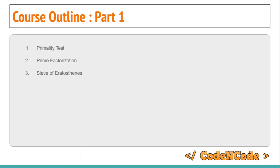Next, we will study the Sieve of Eratosthenes — I'll just refer to it as 'sieve.' The sieve finds all prime numbers in a given range. Suppose you have Q queries and each query asks whether a given number is prime, with values up to 10^6. You can't check each number individually using the sqrt(n) method every time. Instead, you pre-generate all primes up to 10^6 and then answer each query in constant time. The sieve generates all prime numbers in a range in O(n log log n) time.